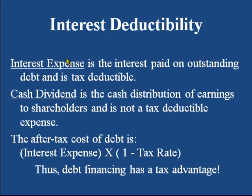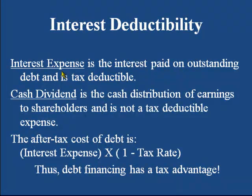The second issue is interest deductibility. The interest is an expense paid on outstanding debt, and this is tax deductible. There is another similar expense known as cash dividend, which is the distribution of earnings to shareholders, but cash dividend is not tax deductible. The formula is: after-tax cost of debt equals interest expense multiplied by (1 minus tax rate). So if you are paying $1,000 of interest expense and the tax rate is 50%, the cost would be $500 only.